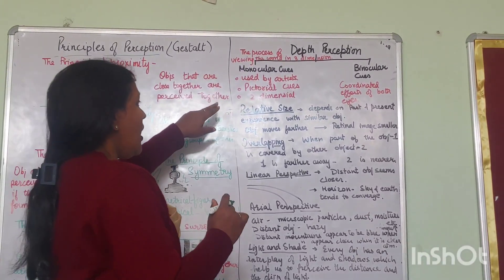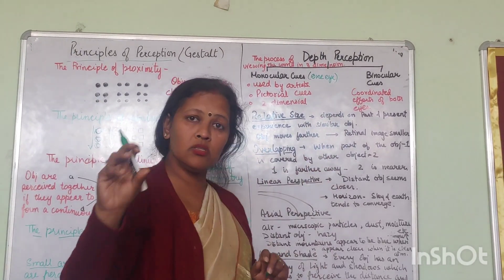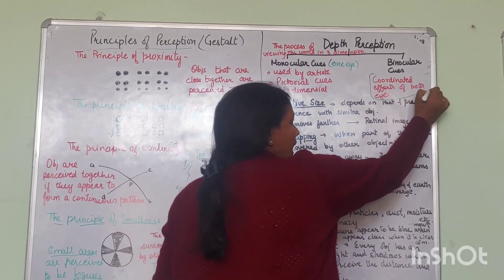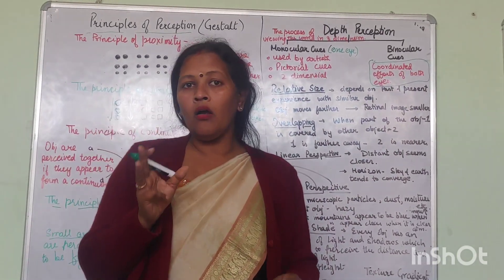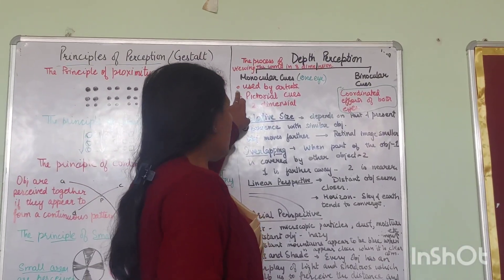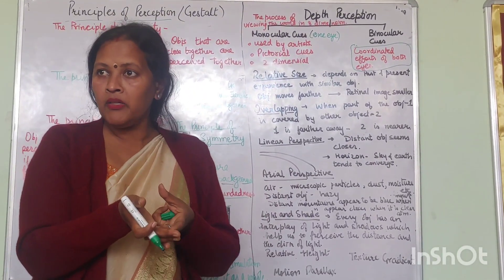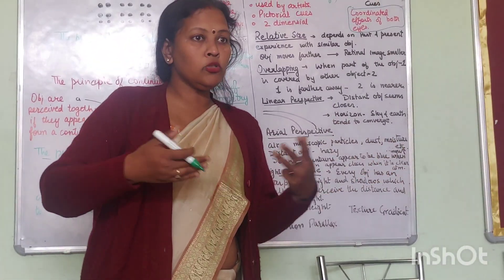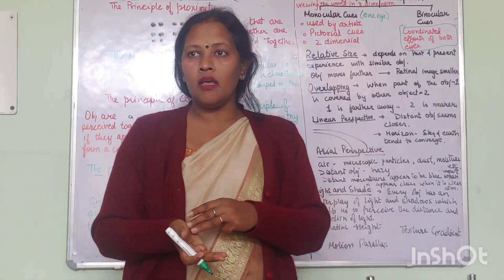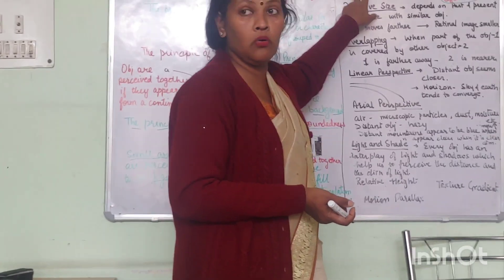Monocular clues are those seen from one eye — each eye sees differently. Binocular clues are a coordinated effort of both eyes. Today we will cover monocular clues. These cues are used by artists to make depth in pictures — something near, something far, something close — using clues visible from one angle in a two-dimensional picture. These are called pictorial clues.